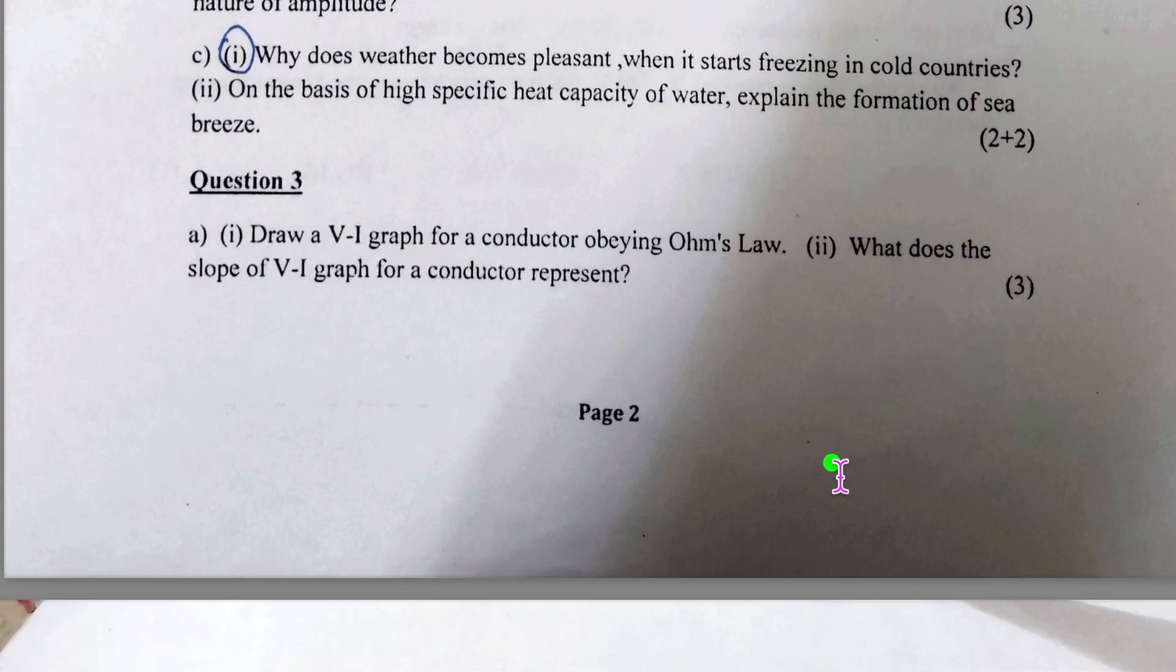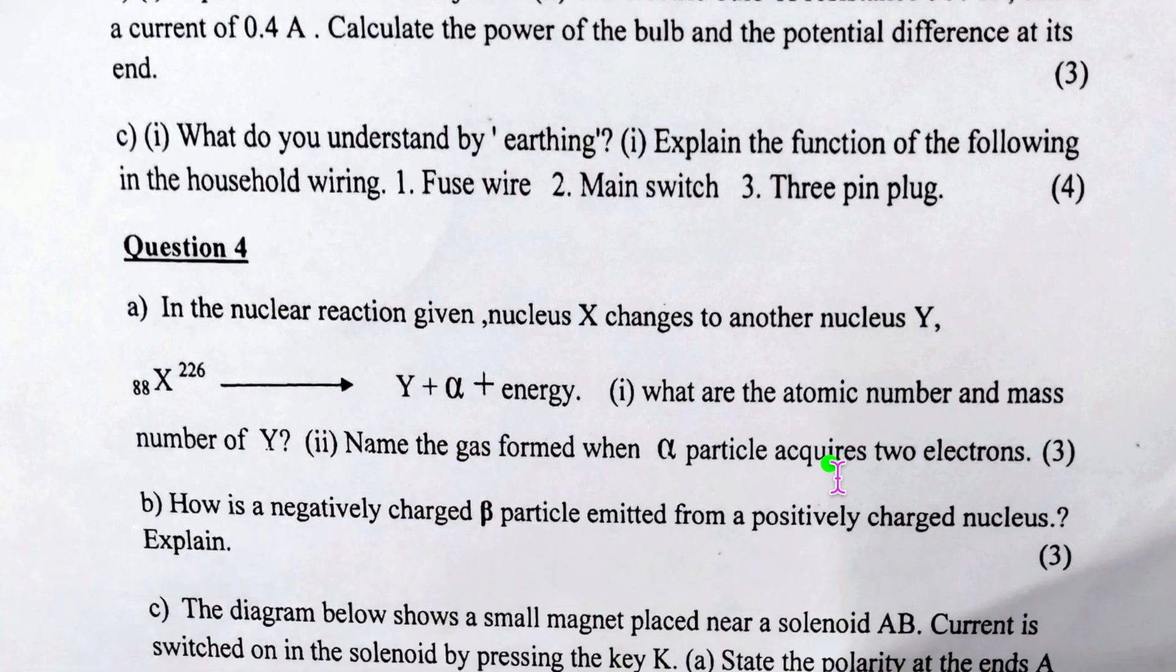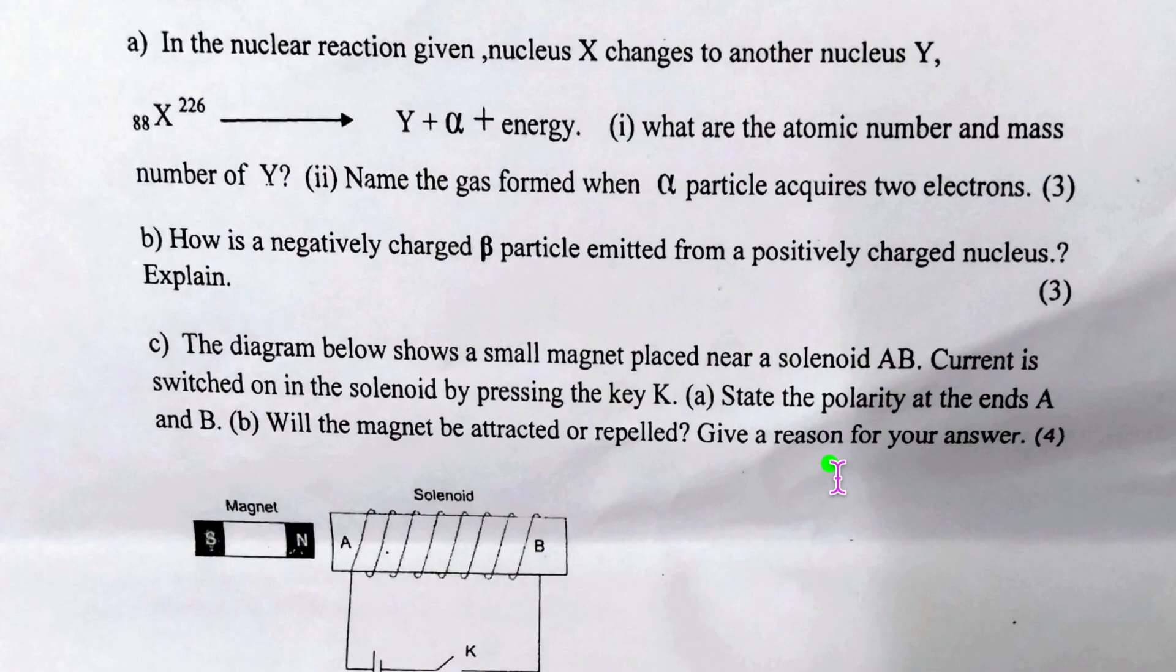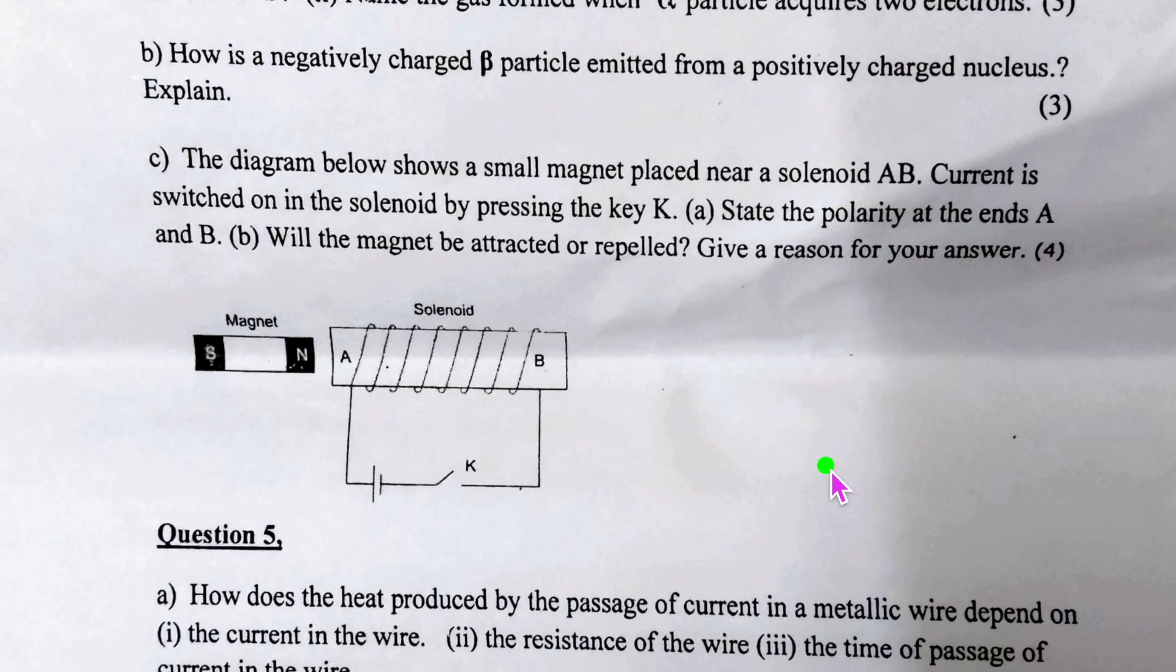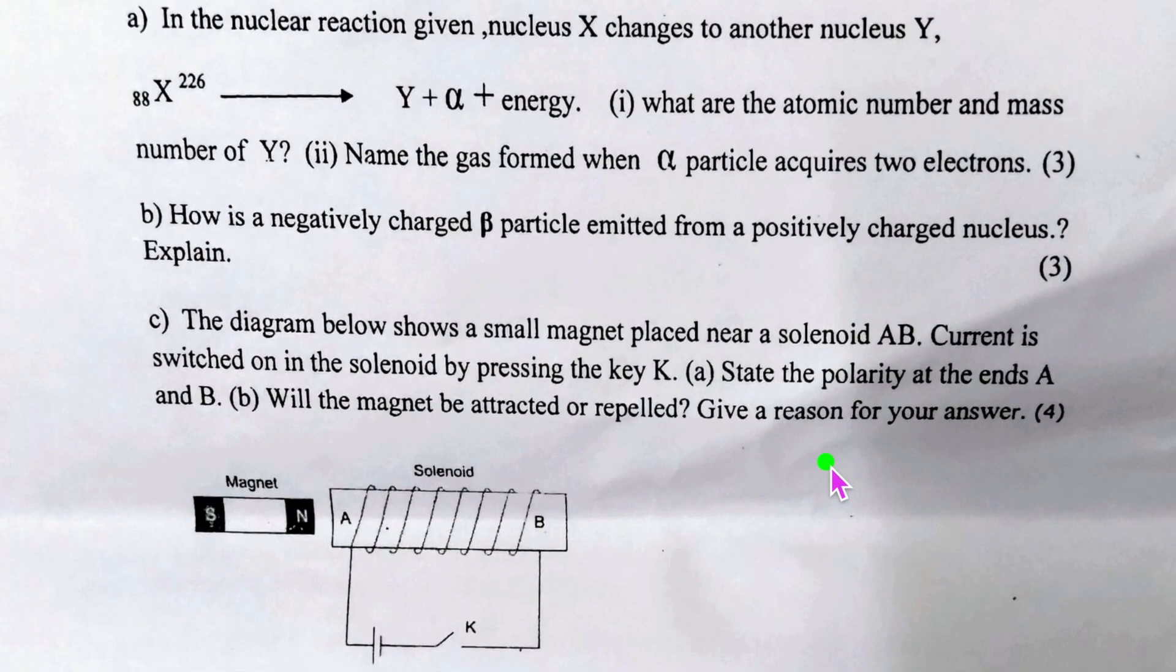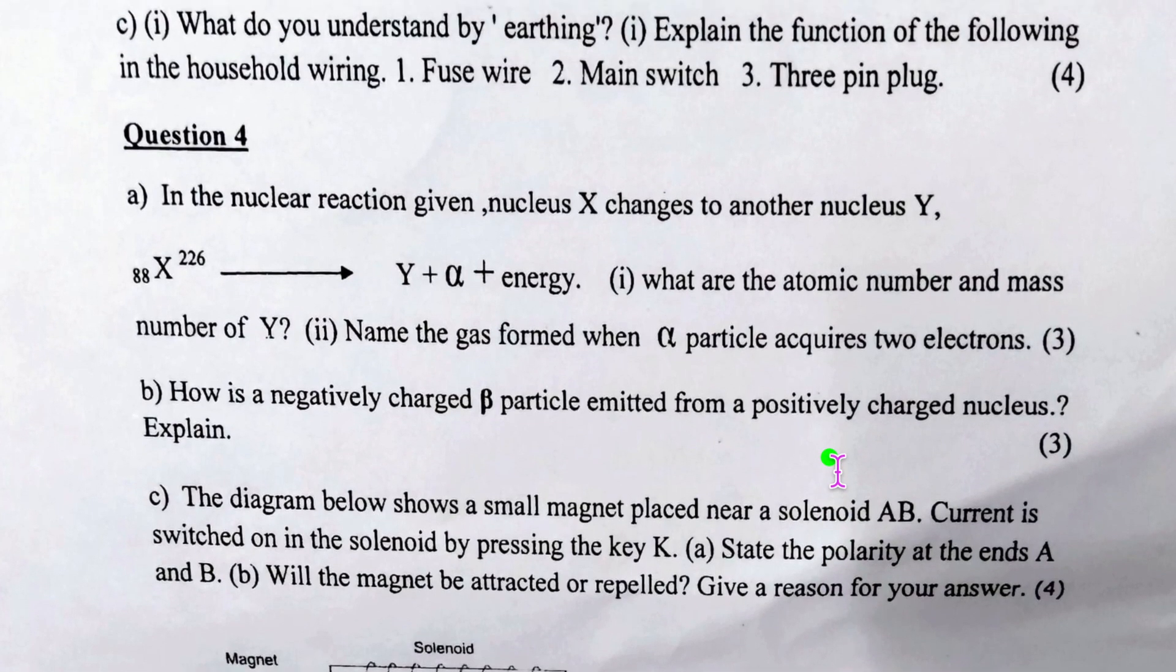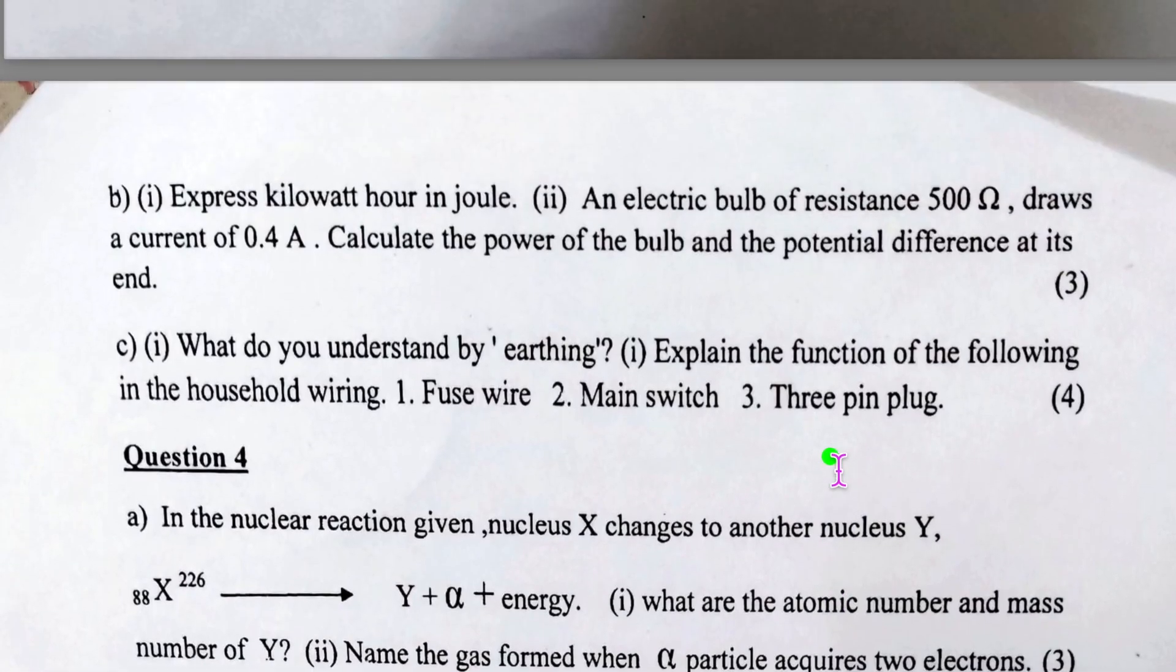That is a fifth question also, but I am going to ask you to just have no choice and attempt the questions up to question number 4. So that will be three questions from your Section 2, which will be for 30 marks, and your Section 1 will be for 10 marks overall.